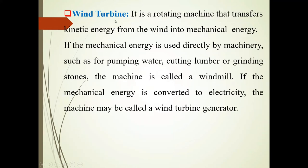The second term is wind turbine. It is a rotating machine that converts kinetic energy from wind into mechanical energy. If this mechanical energy is used directly by machinery, such as for pumping water, cutting lumber, or grinding stones, the machine is called a windmill. If the mechanical energy is converted to electricity instead, then that machine is called a wind turbine generator, or wind turbine.